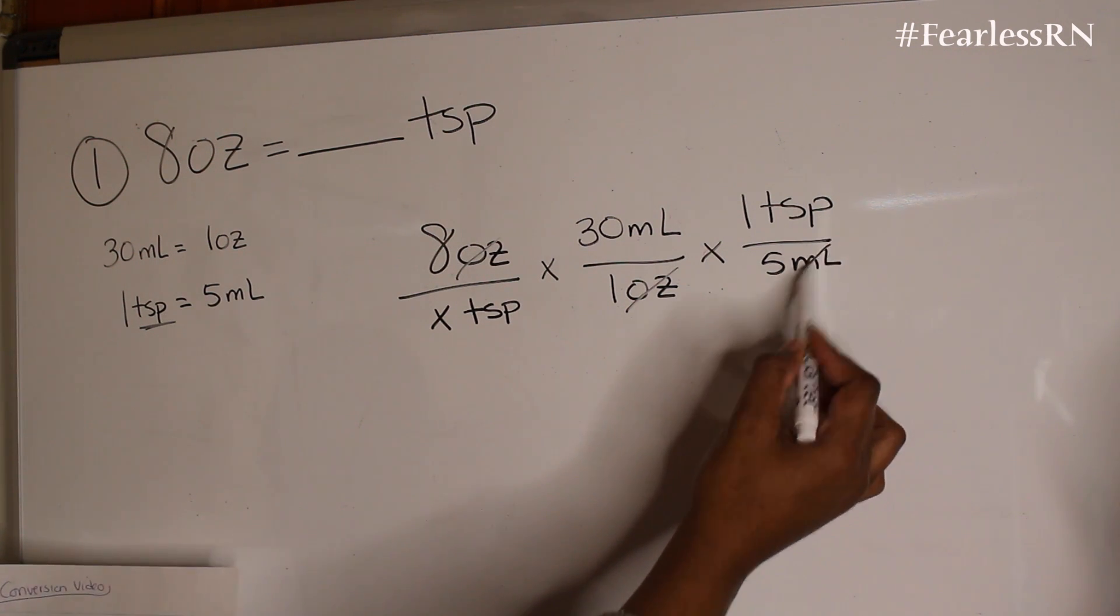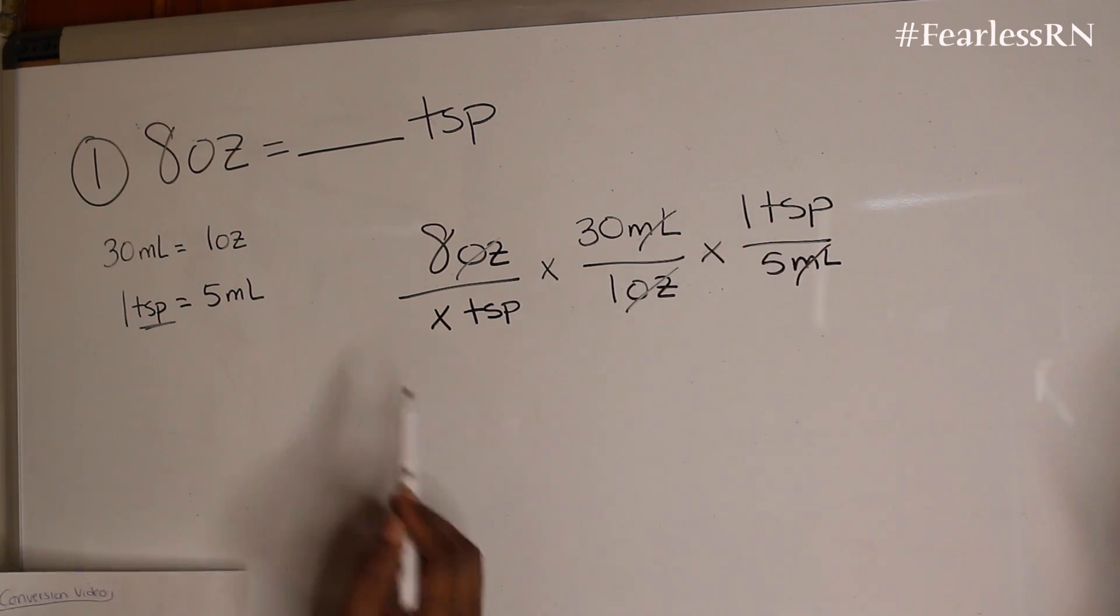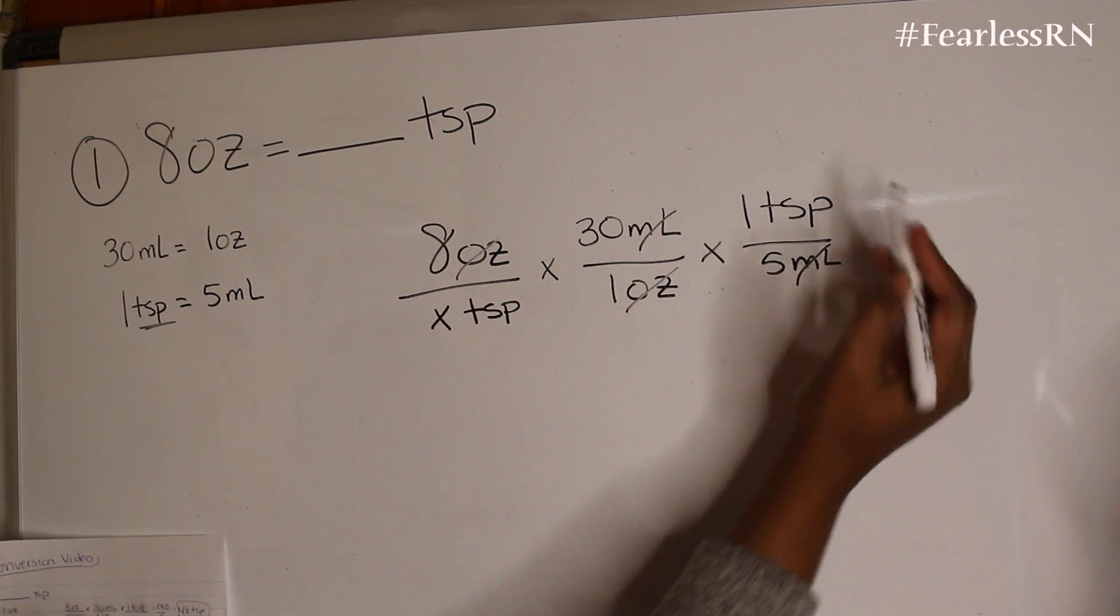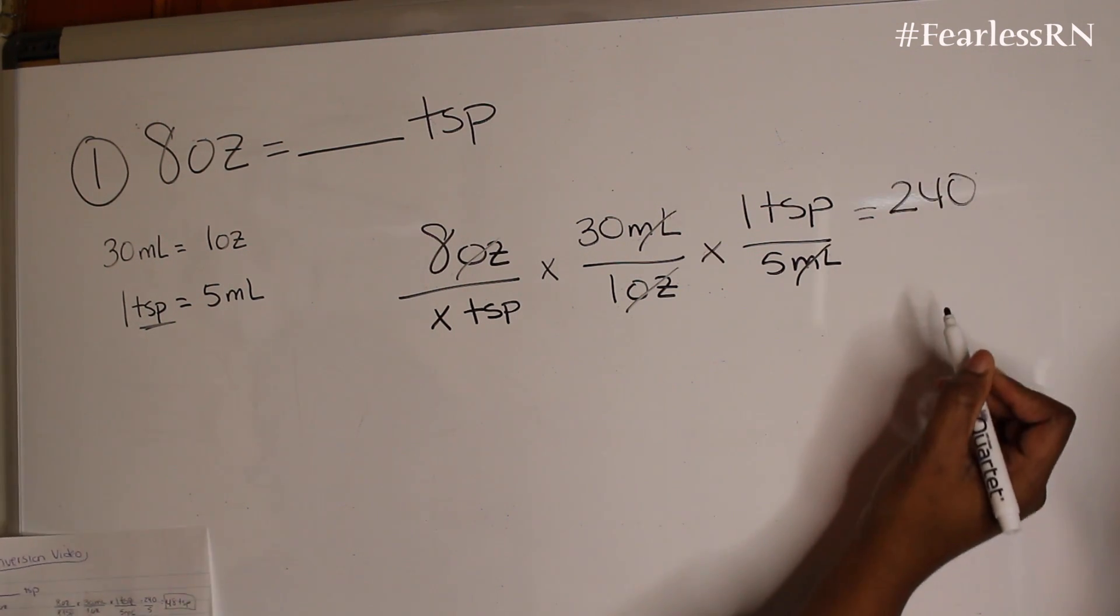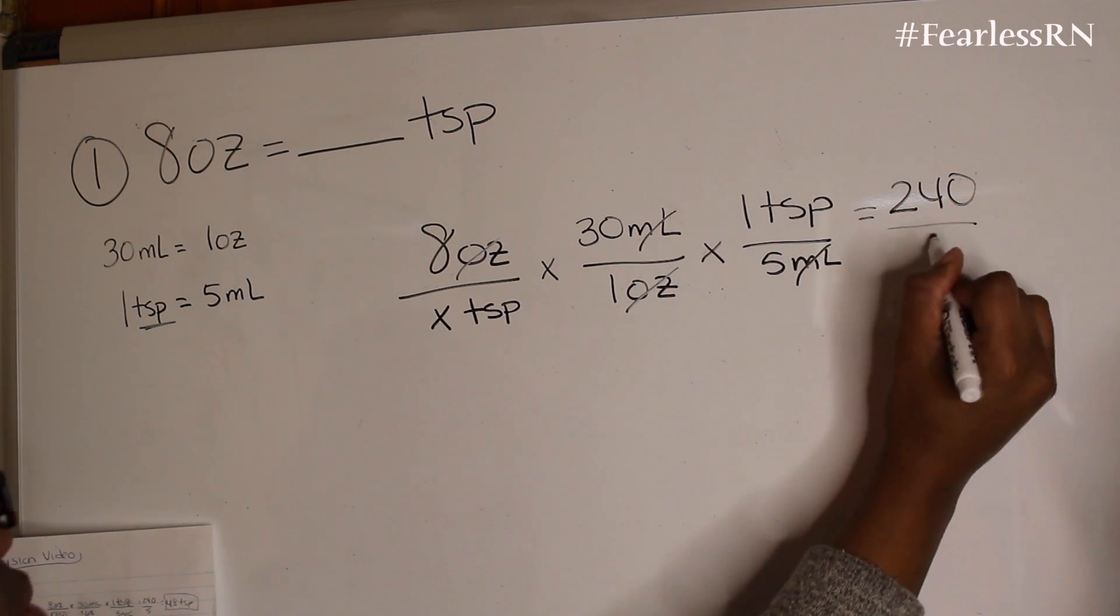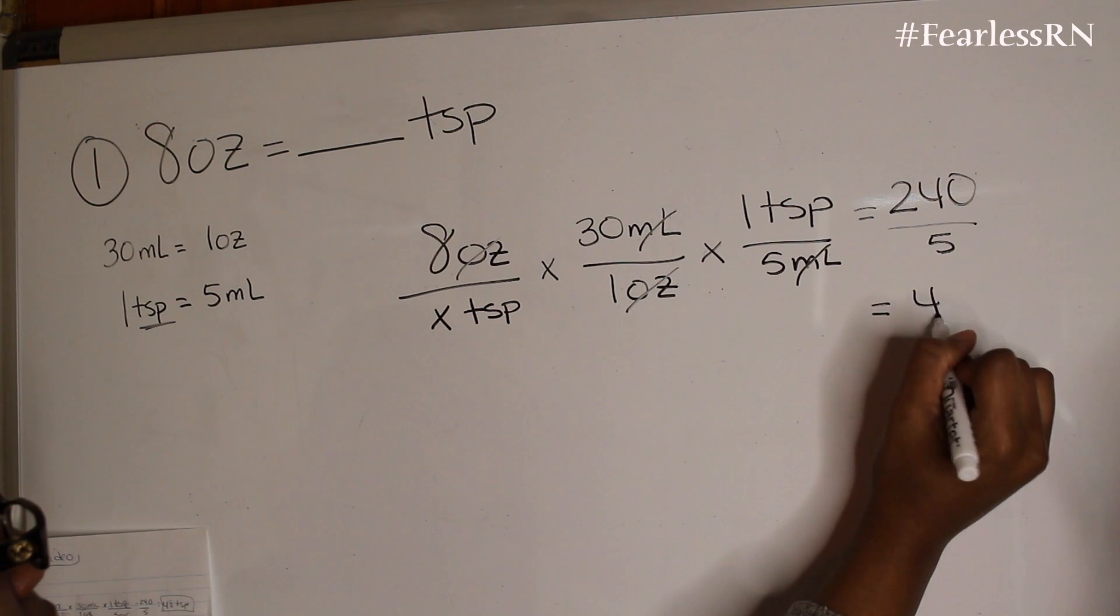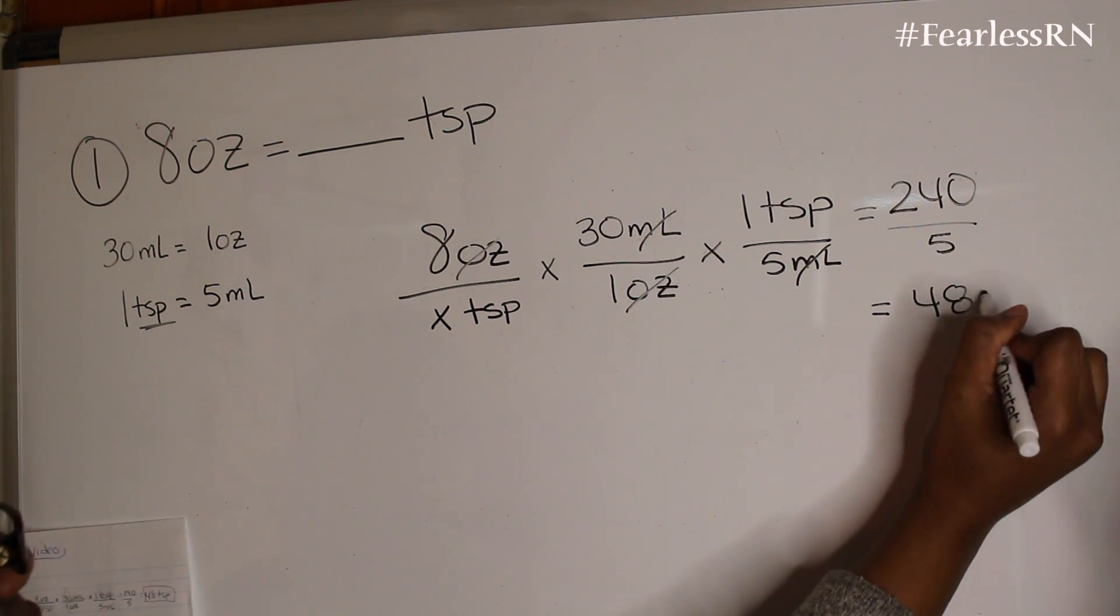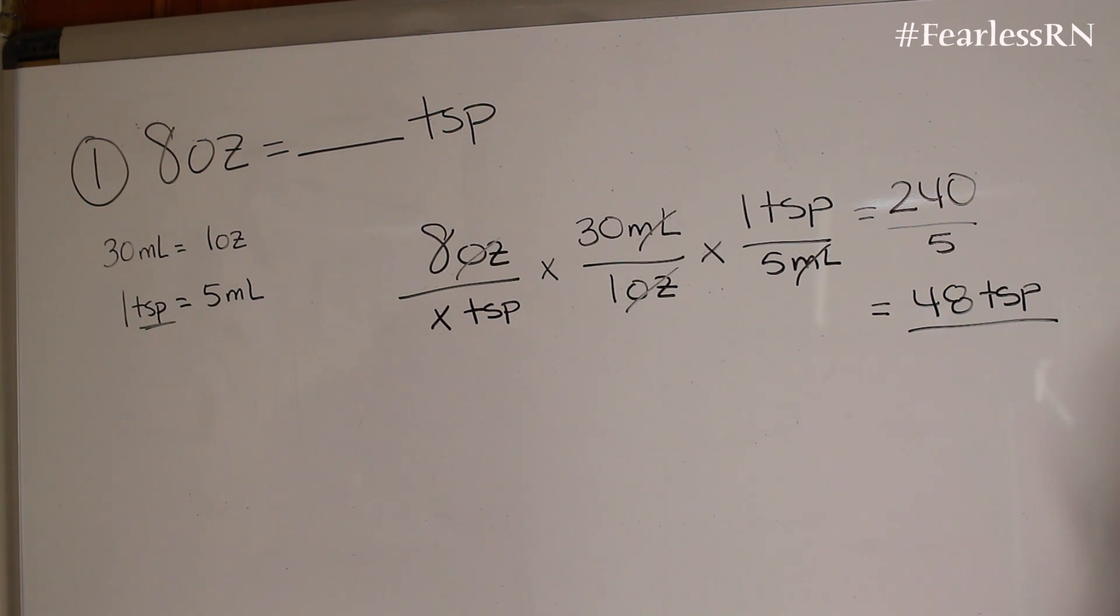Now we're able to cancel out because the goal is we want tablespoons. So we're just going to cancel this and multiply straight across. So 8 times 30 times 1 equals 240 and 1 times 5 is 5. You're going to divide that and you'll be getting 48 teaspoons. So 8 ounces equals 48 teaspoons.